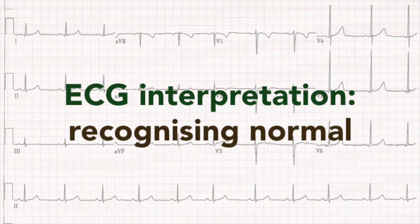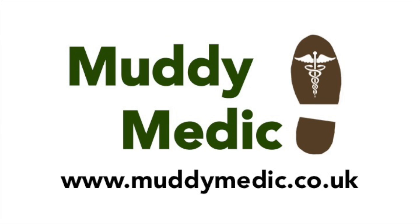This is a starting point for ECG interpretation. After checking rate, rhythm, and axis, go on to look closely at each lead in turn for any other abnormalities.